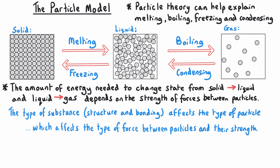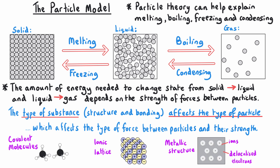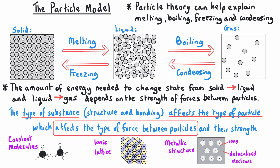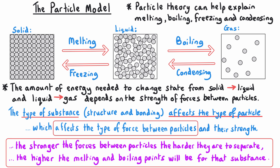The type of substance itself — its structure or bonding — will affect the type of particle it is made up of. This could mean we're talking about molecules, or we could be talking about ions in a lattice. This will affect the type of force between the particles and the strength of those forces. A useful generalization is that the stronger the forces between particles, the harder they will be to separate, and so the higher the melting and boiling points will be for that substance.